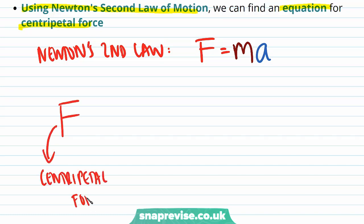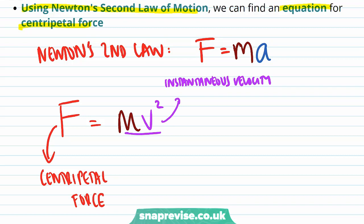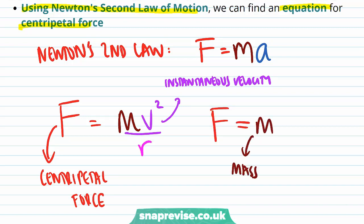Firstly, the centripetal force is equal to mass M times instantaneous velocity squared divided by R, and force is also equal to the mass of the object times the radius of the circular motion times the angular velocity squared.